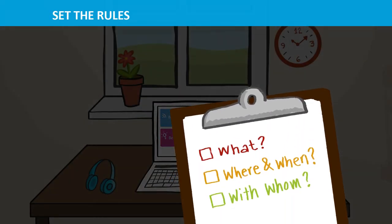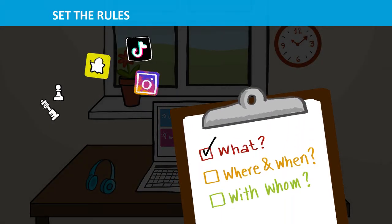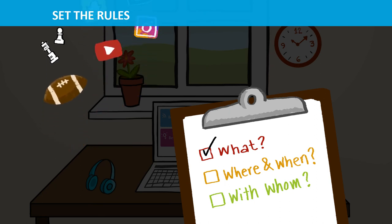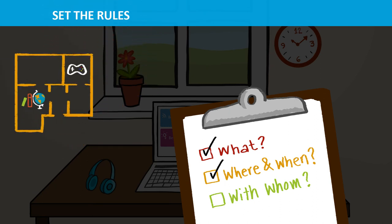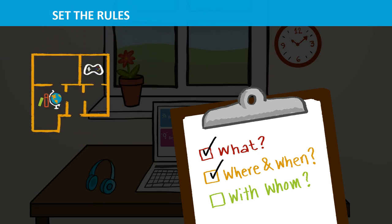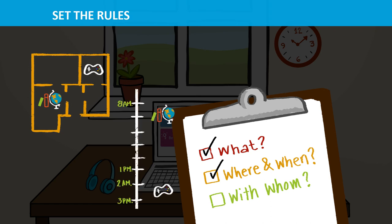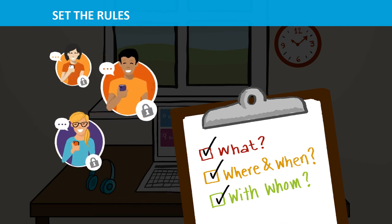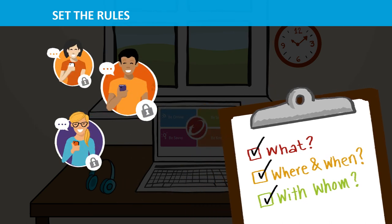Research online and decide what apps, games, and devices to allow. If you can, designate spaces for kids to be online for school versus for fun. Agree on times to be on-screen and off-screen or outdoors. Be sure they stick to online chats with people that you know and trust.